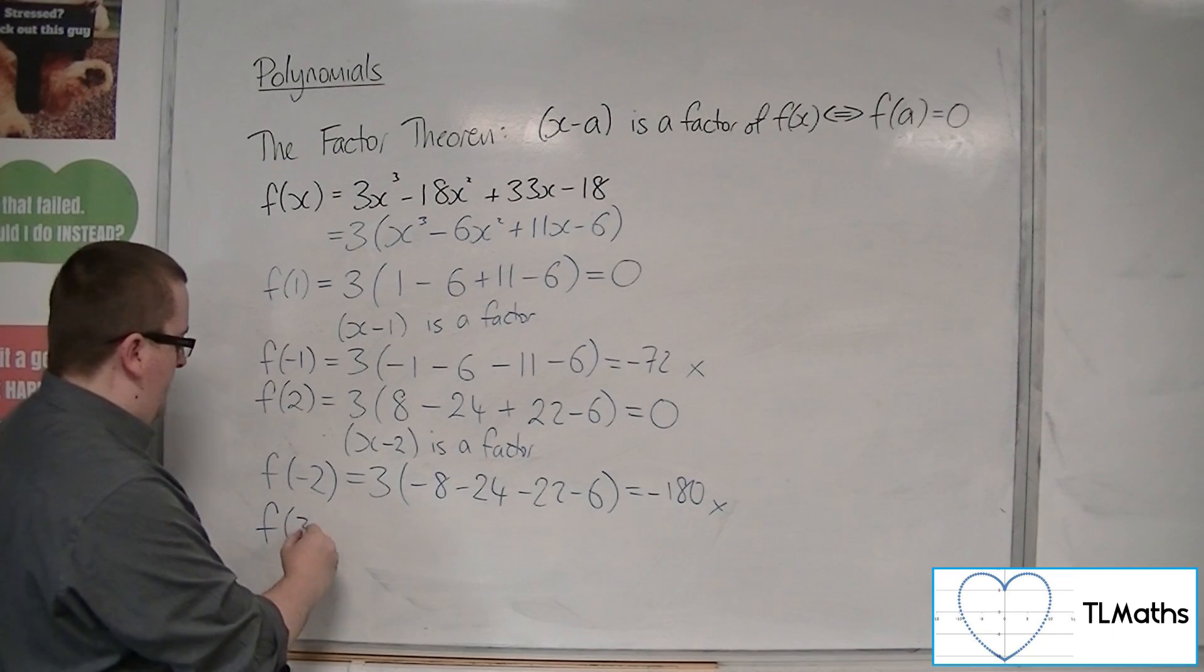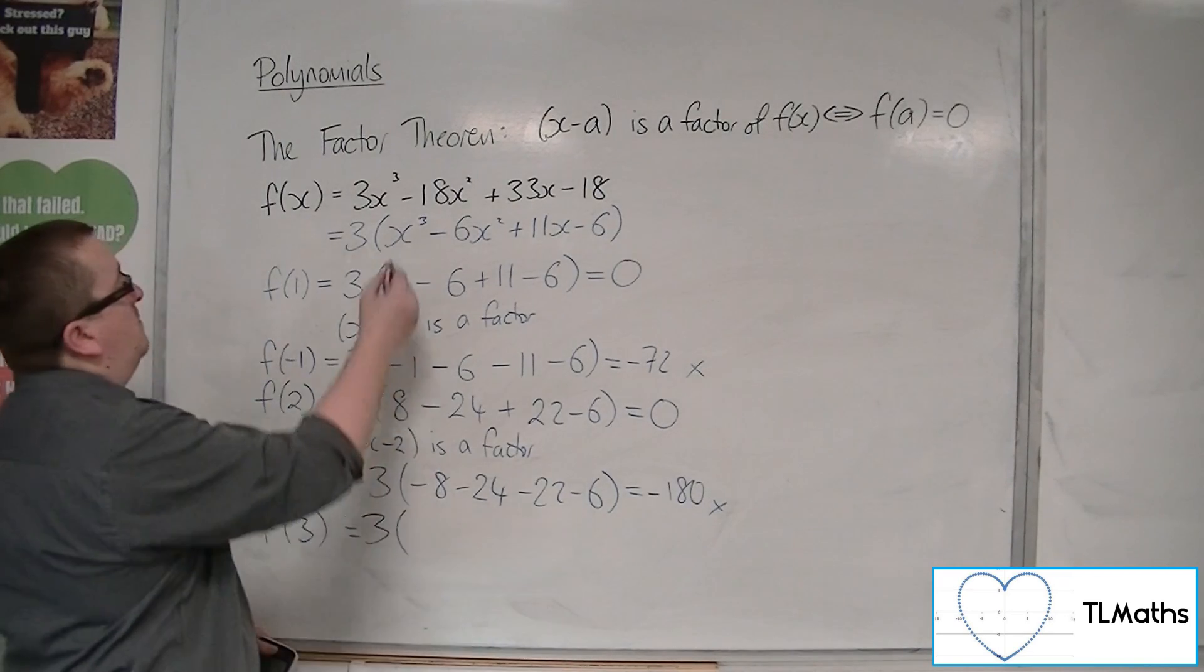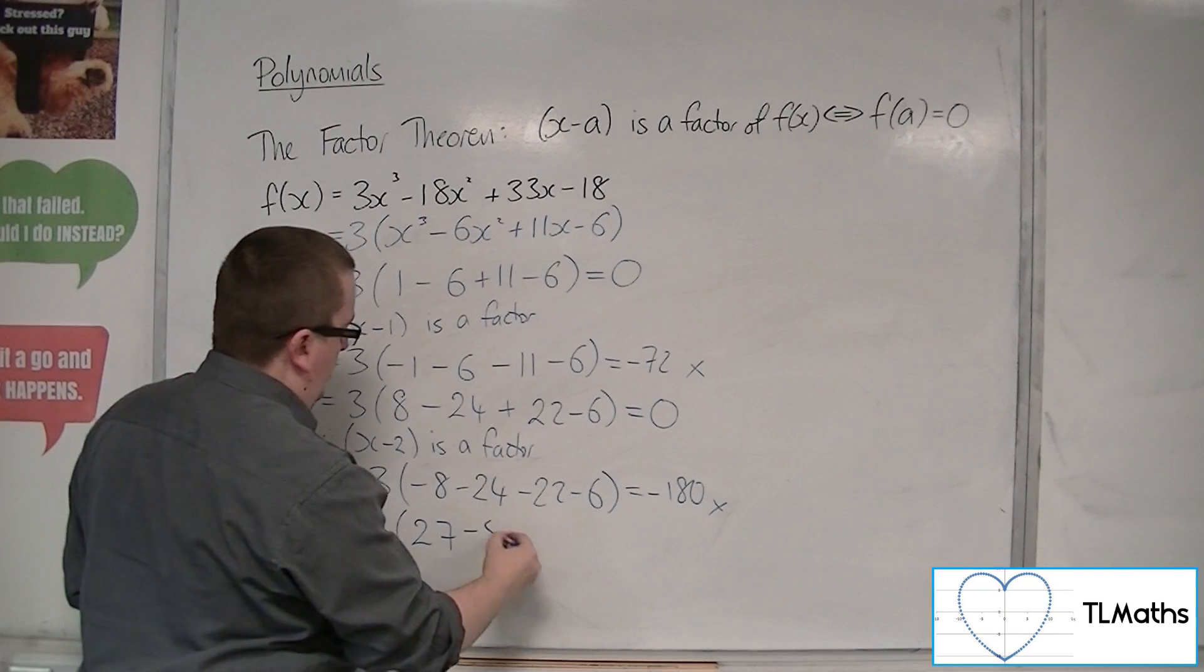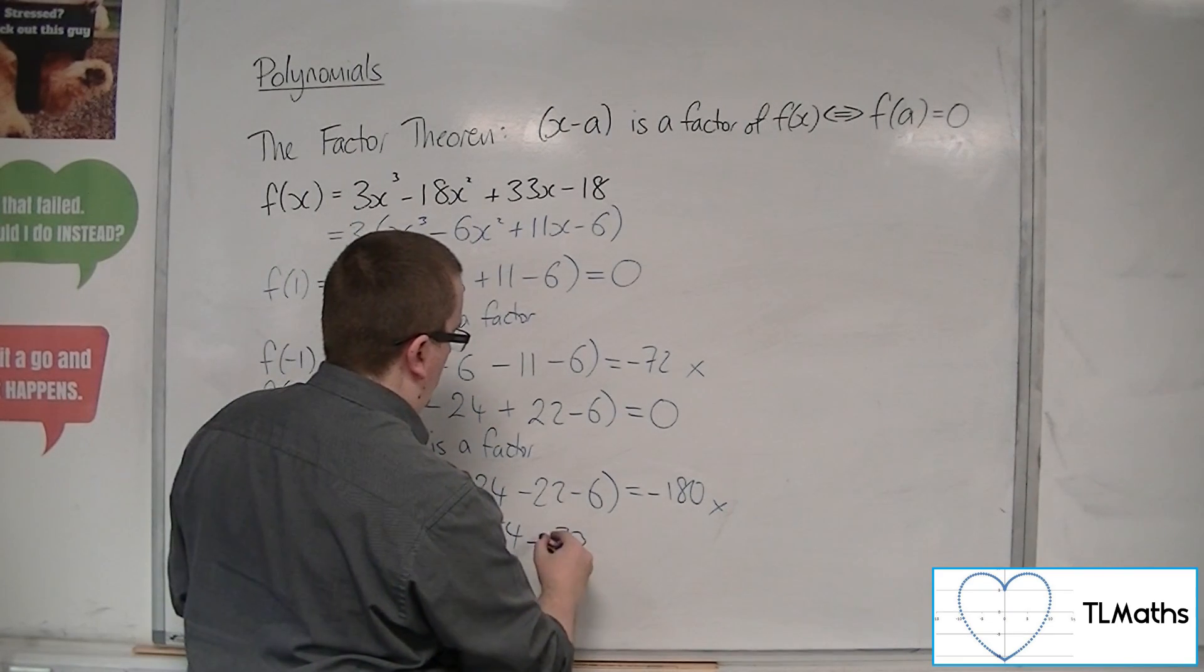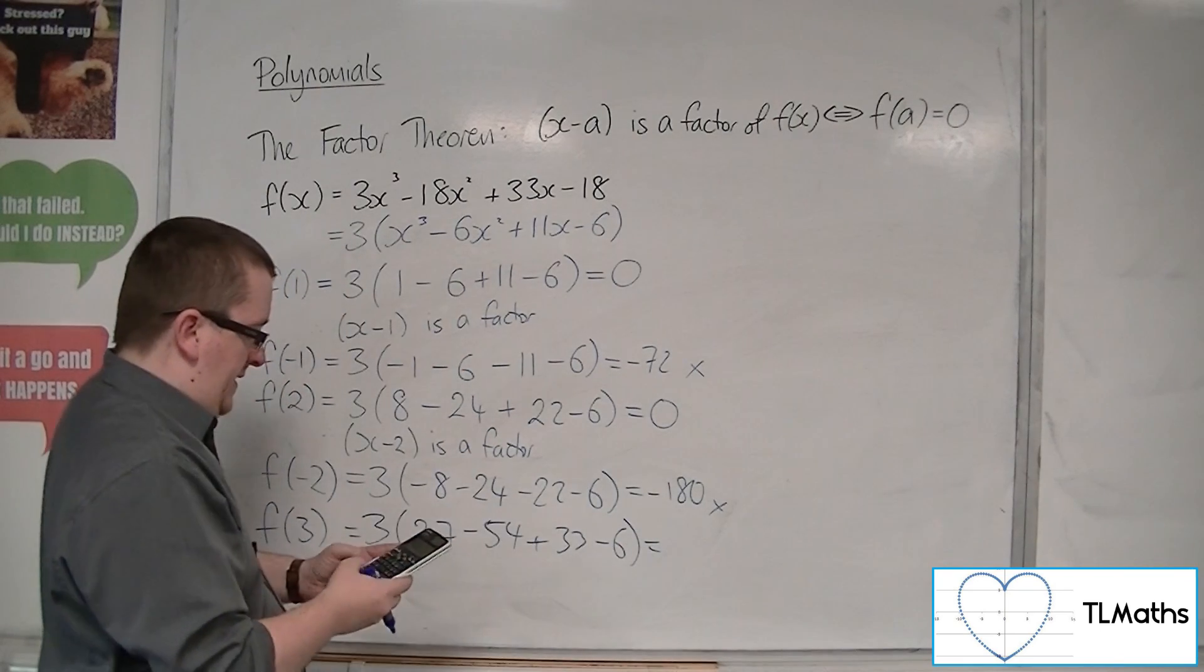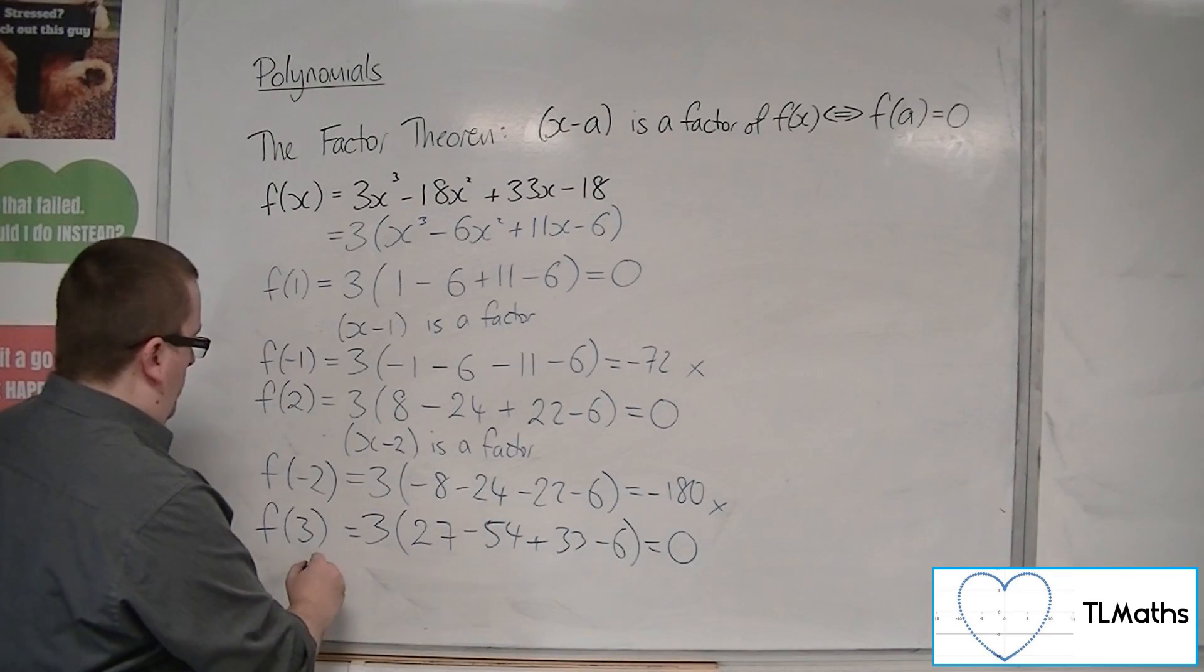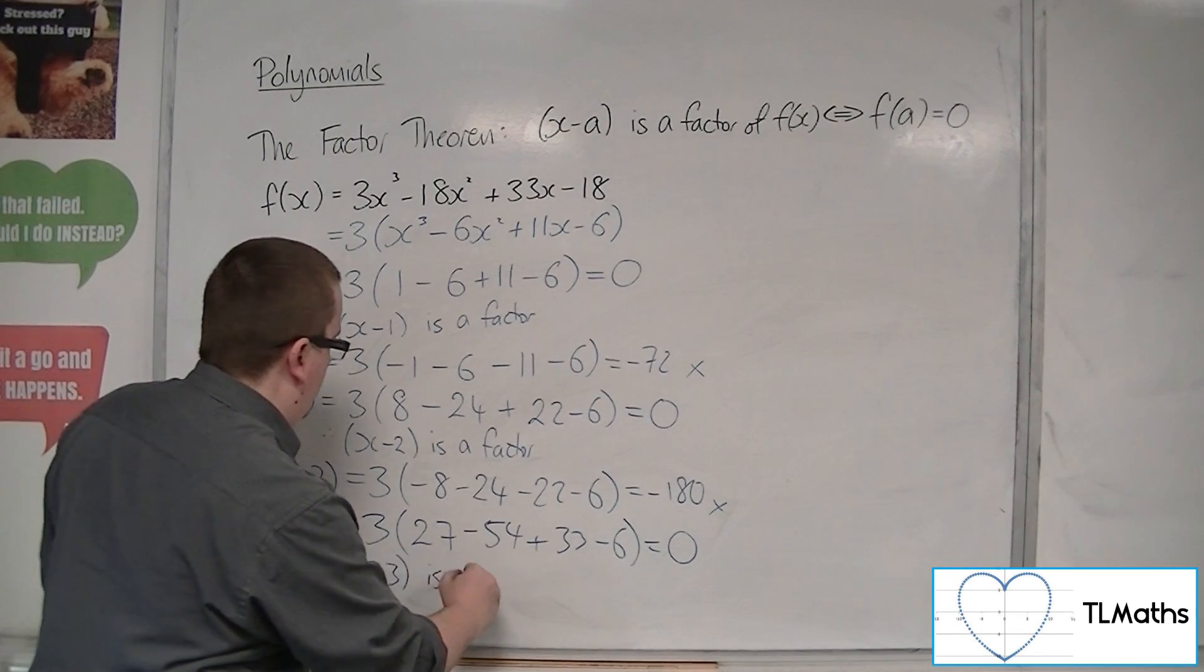So f of 3, from what we've just said, we think that should work. So 3 lots of 3 cubed is 27. 3 times 3 is 9, so minus 54, plus 33, take away 6, take away 6, gets a 0. So that's 0. So therefore, x minus 3 is a factor.